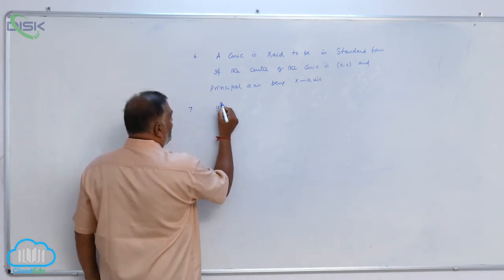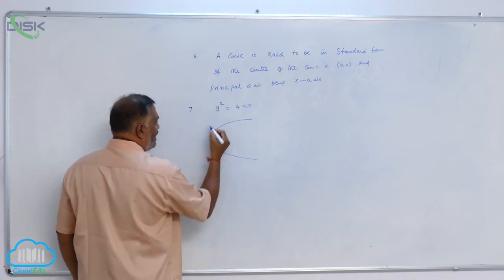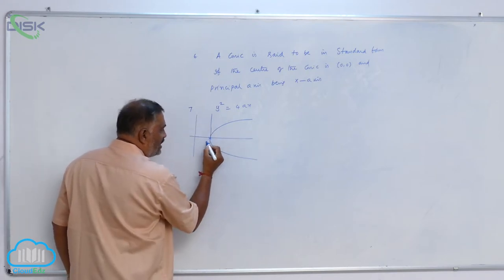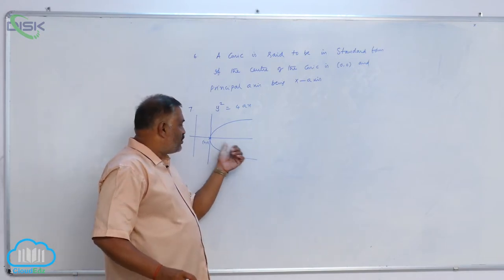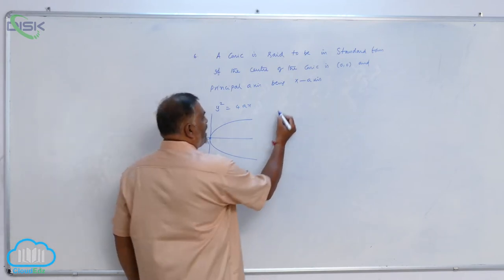Now if you take y² = 4ax for a parabola, the figure will be like this. You observe that this is (0,0). As you know, a parabola has only one vertex; the vertex and center coincide.